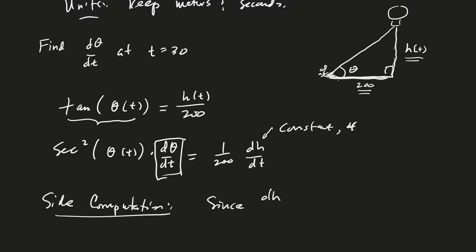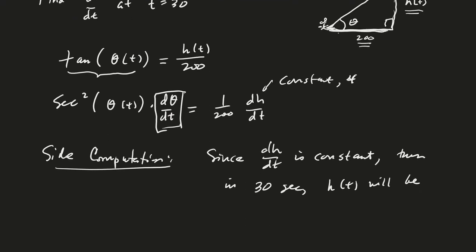Since dh/dt is constant, then in 30 seconds, h(t) will be 30 times 4, and so that's going to be 120.